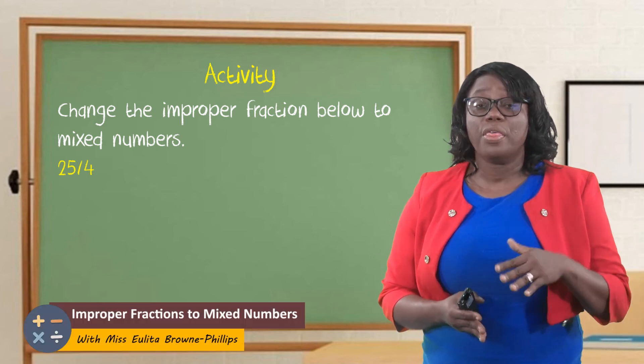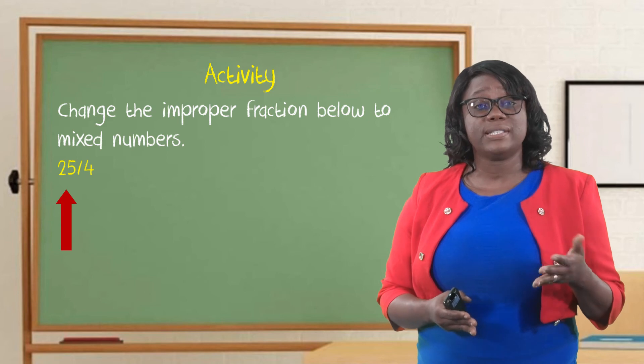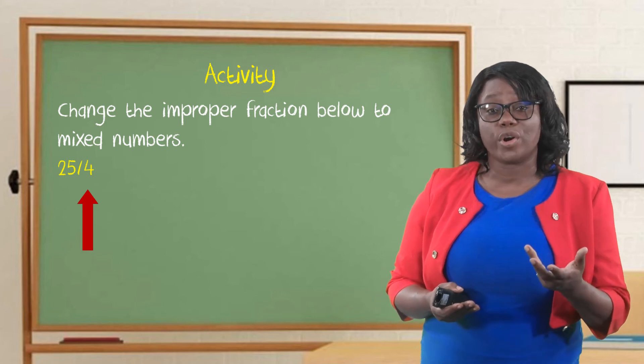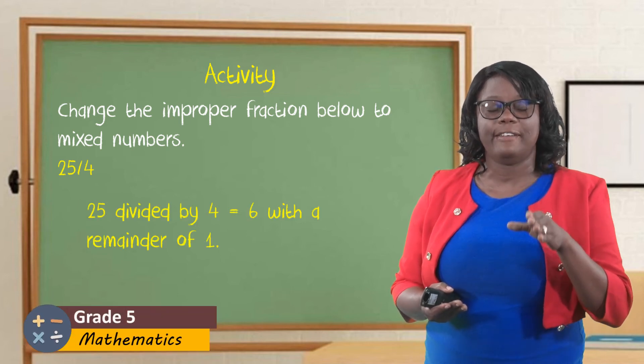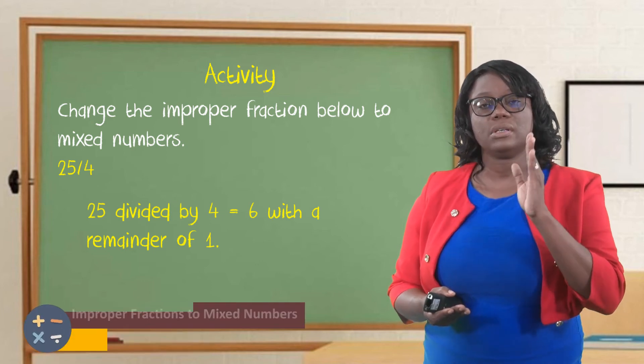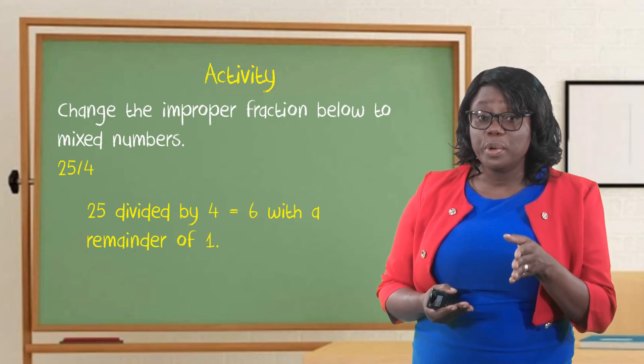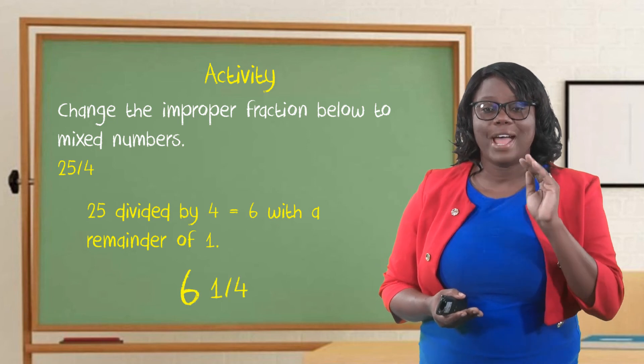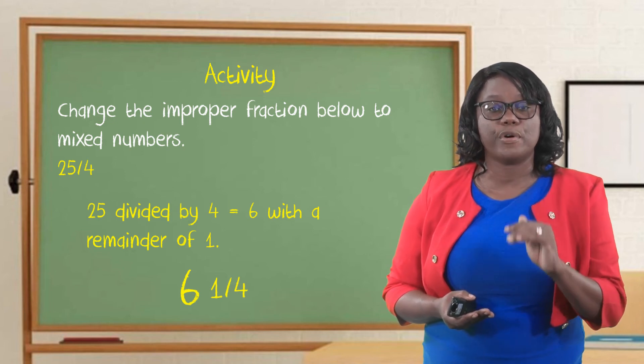25-fourths. The rule says, divide the numerator by the denominator. Our numerator is 25, and our denominator is 4. How many groups of 4 can we get from 25? 4 into 25, 6, with 1 remainder. So, 6 becomes our whole number. What do we do with the 1? We place the 1 over the denominator, 4. So, 25-fourths as a mixed number is 6 and 1-fourth.